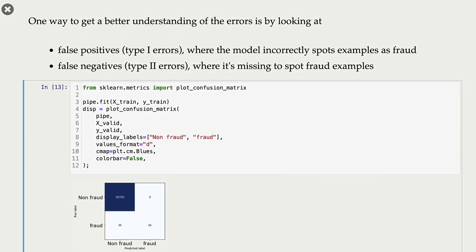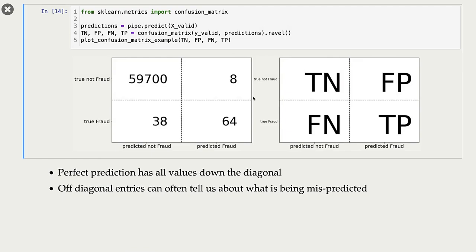Let's start with true negatives. This number, 59,700, represents the number of examples that are actually non-fraudulent examples, and these examples were also predicted as non-fraudulent by our logistic regression.